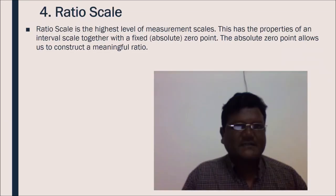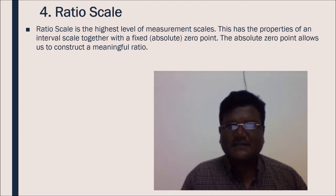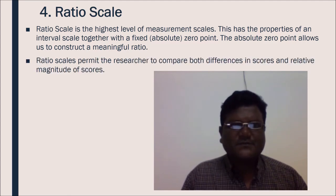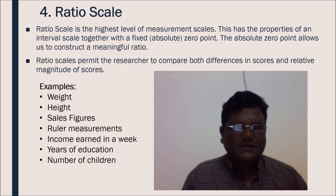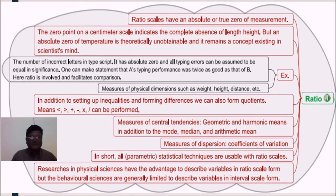Now, the last scale, that is ratio scale. Ratio scale is the highest level of measurement scale. This has the properties of an interval scale together with a fixed, i.e. absolute zero point. The absolute zero point allows us to construct a meaningful ratio. Ratio scales permit the researcher to compare both differences in scores and relative magnitude of scores. Examples of ratio scales are weight, height, sales figures, ruler measurement, income earned in a week, years of education, number of children.